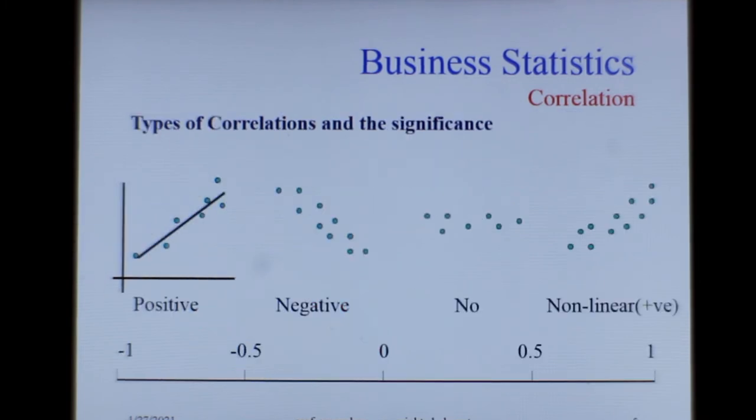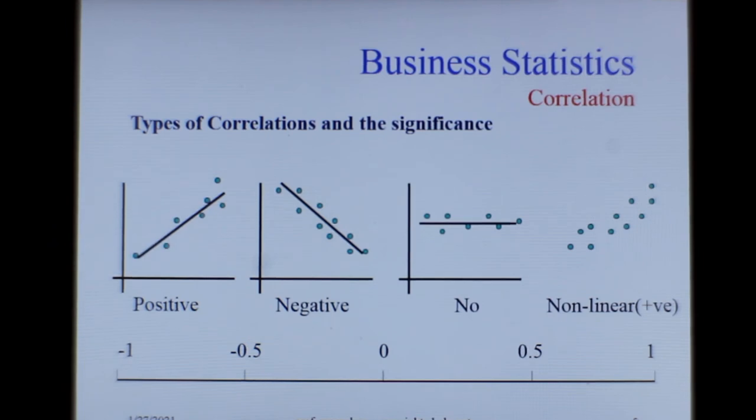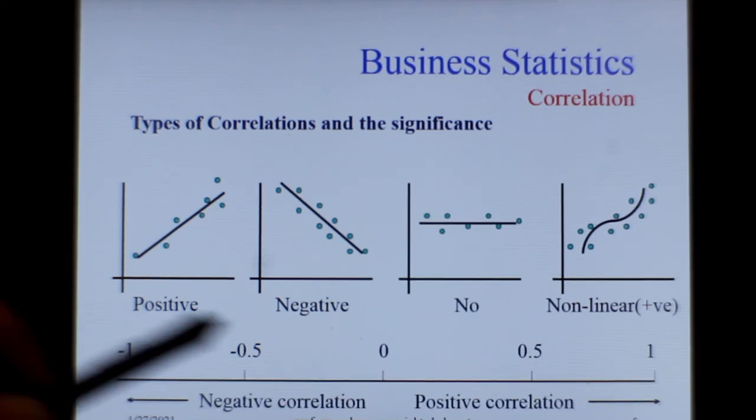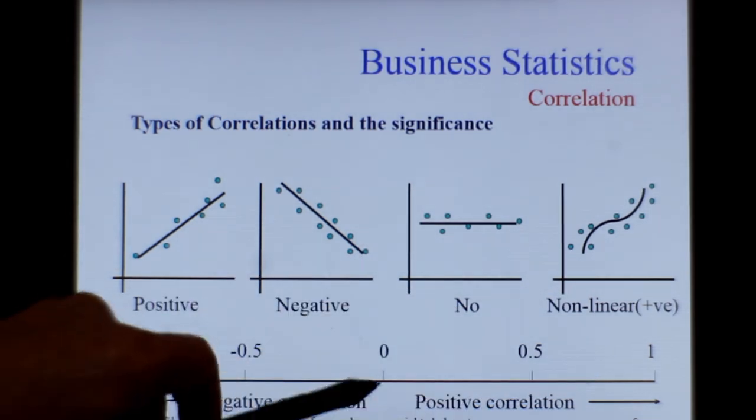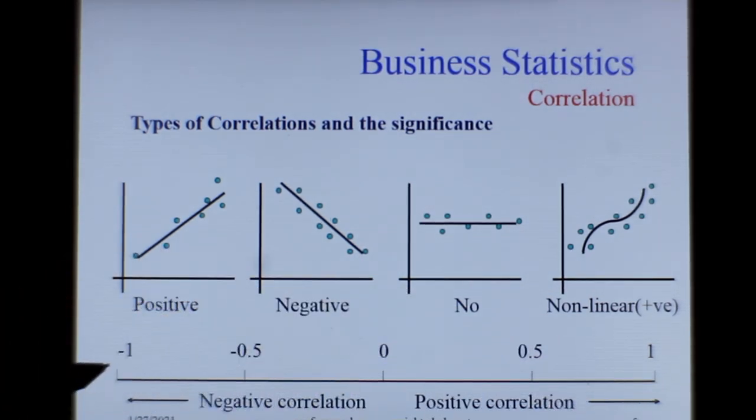Now this is a graphical explanation of various types of correlation: the positive correlation, the negative correlation where this is variable x and this is variable y, and there is no correlation in this, and this is a nonlinear correlation. Again, the strength of correlation moves from 0 to minus 1 and 0 to plus 1. Positive correlation will be plus 1 and negative correlation maximum can be minus 1, and that is what is a measure of correlation, or the strength of correlation.